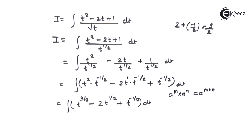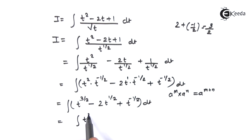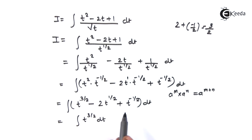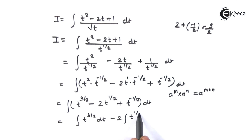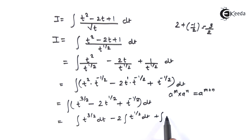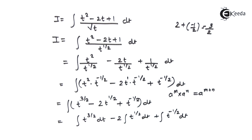In the next step we can separate the integral: integral of t raised to 3 by 2 dt, minus 2 times integral of t raised to half dt, plus integral of t raised to minus half dt.